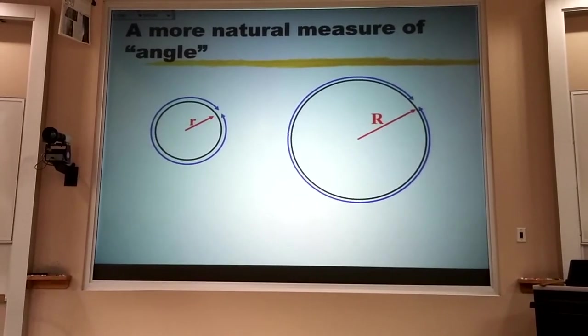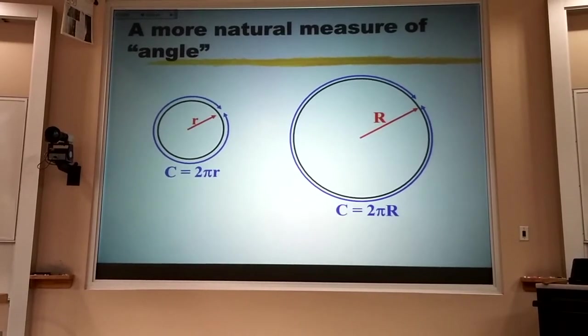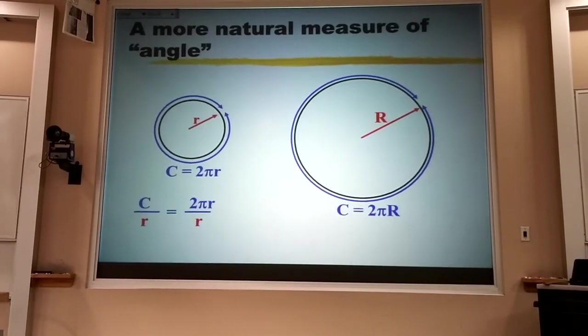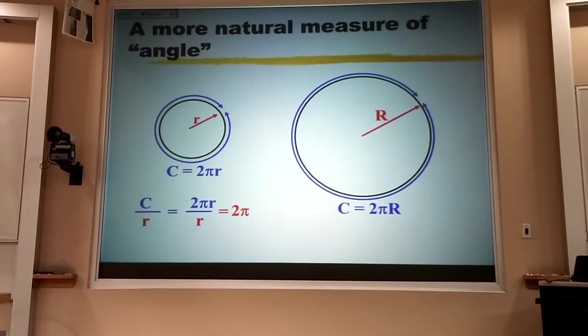their circumference is going to be 2πr in either case. If I take that circumference and I divide by the radius, I get this special number 2π,